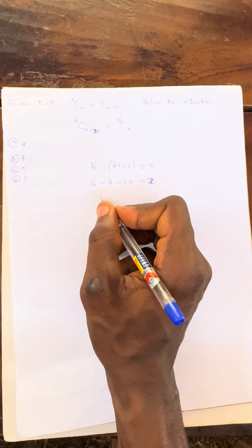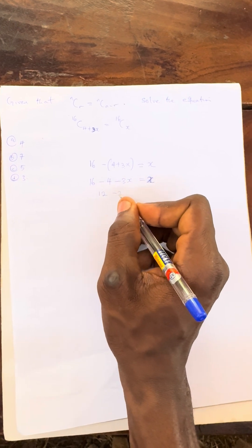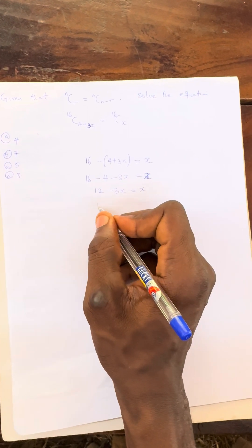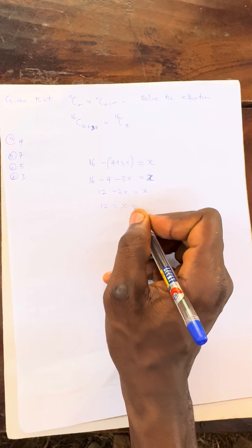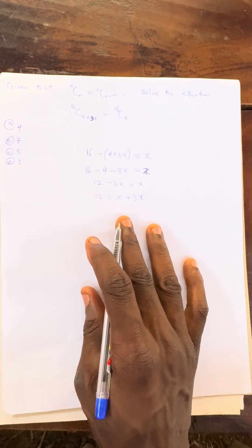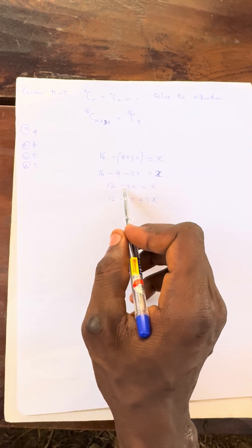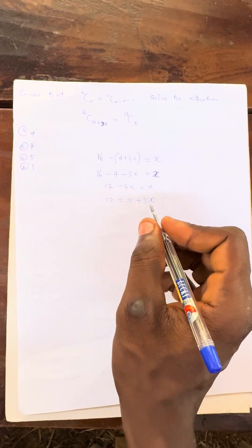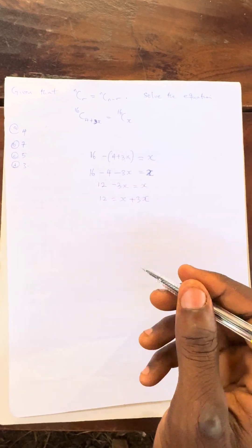Now we check this. 16 minus 4 is 12, so minus 3x is equal to x. Then 12 will now be equal to x plus 3x. By the time I take this minus 3 to this side it becomes what? Plus 3x. Minus 3x to this side becomes plus 3x.